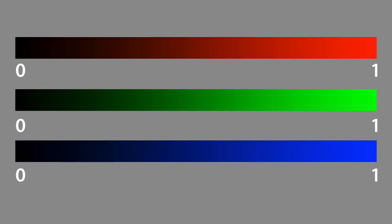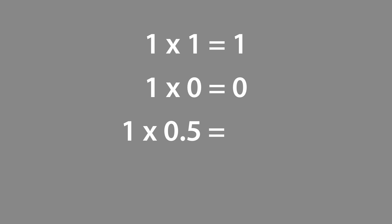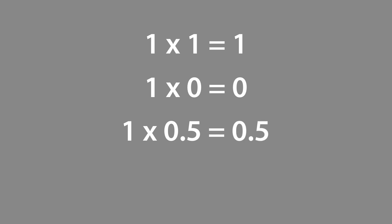Representing the values from black to white as 0 to 1 makes what we're going to do next much easier to understand and follow. This 0 to 1 representation works for each colour channel too — 0 in the red channel is no red at all and 1 is full red; same goes for the green and the blue channels. Now all we need to do is remember some primary school multiplication maths. If we multiply a number by 1, it stays the same, so 1 × 1 = 1. If we multiply a number by 0, we get 0, so 1 × 0 = 0. And if we multiply something by a fraction, we get that fraction of the original number, so 1 × 0.5 = 0.5 and 0.5 × 0.5 = 0.25.